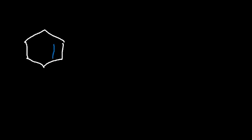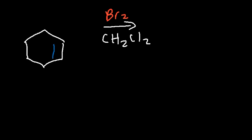Let's say if we have cyclohexene. What's going to happen if we react it with bromine in an inert solvent such as dichloromethane? And in another situation, let's react it with bromine and water. So what are the products of these reactions?